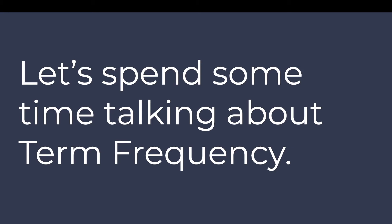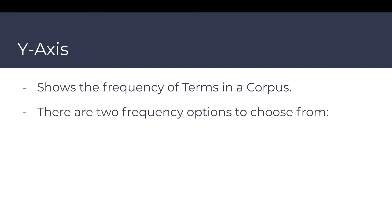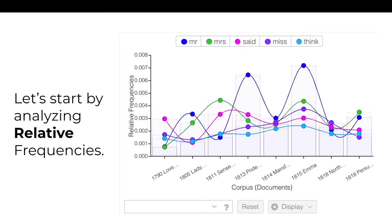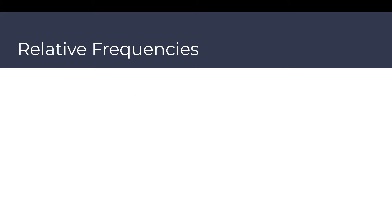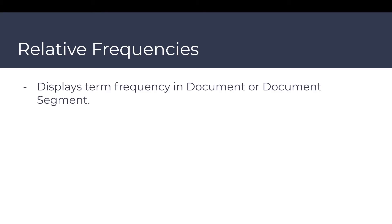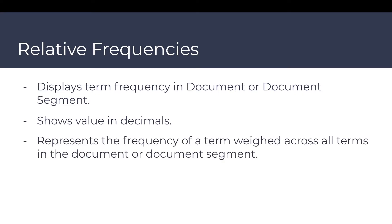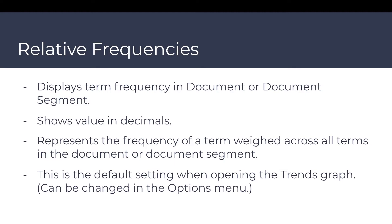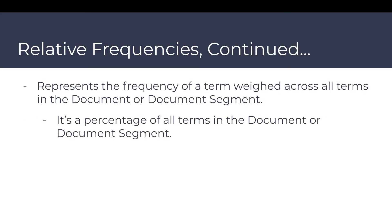Let's spend some time talking about term frequency. The y-axis of the trends graph shows the frequency of terms in a corpus. There are two options to choose from: relative or raw frequencies. Relative frequencies display term frequency in document or document segments, showing numerical values in decimals. It represents the frequency of a term weighed across all terms in the document or document segment, and is the default setting when opening the trends graph.